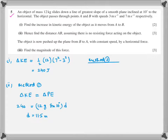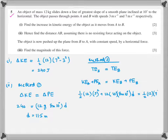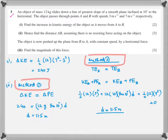Method two — total energy at the top minus total energy at the bottom equals work done against resistance. But there is no resistance, so total energy at A equals total energy at B. Therefore: ½ × 12 × 3² + 12g sin θ × d equals ½ × 12 × 7². Make d the subject and it comes out to be 11.5 meters. Both methods are about the principle of conservation of energy — just two different approaches.